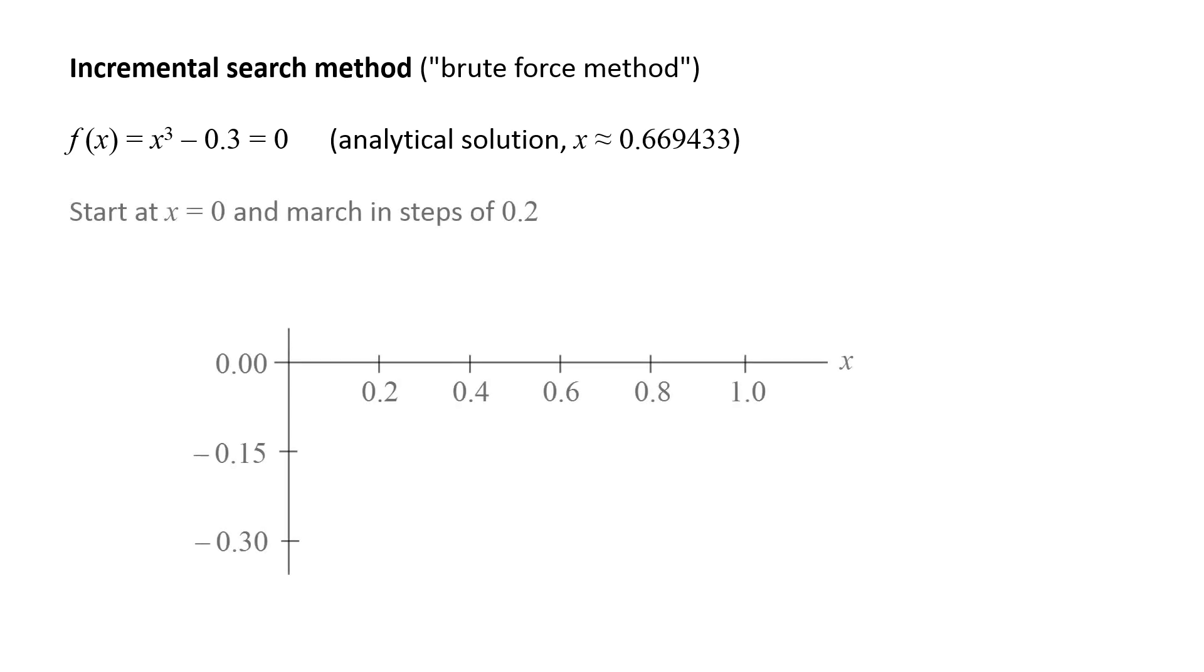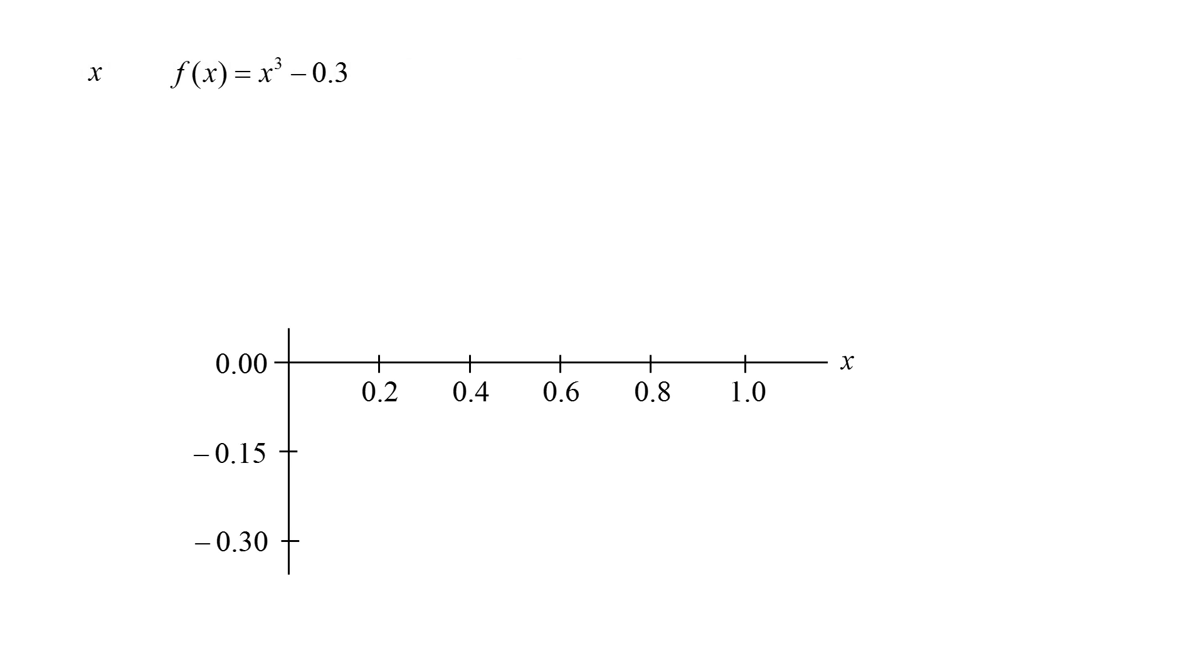We start at some value of x, such as x = 0, and march forward using a constant step size. Let's arbitrarily choose 0.2 as the step size. Now we calculate the value of the function at various values of x. Starting at x = 0, we find that f(x) is -0.3. Since we are starting at a negative value of the function, we will march forward with a step size of 0.2 until the value of the function becomes positive or zero.